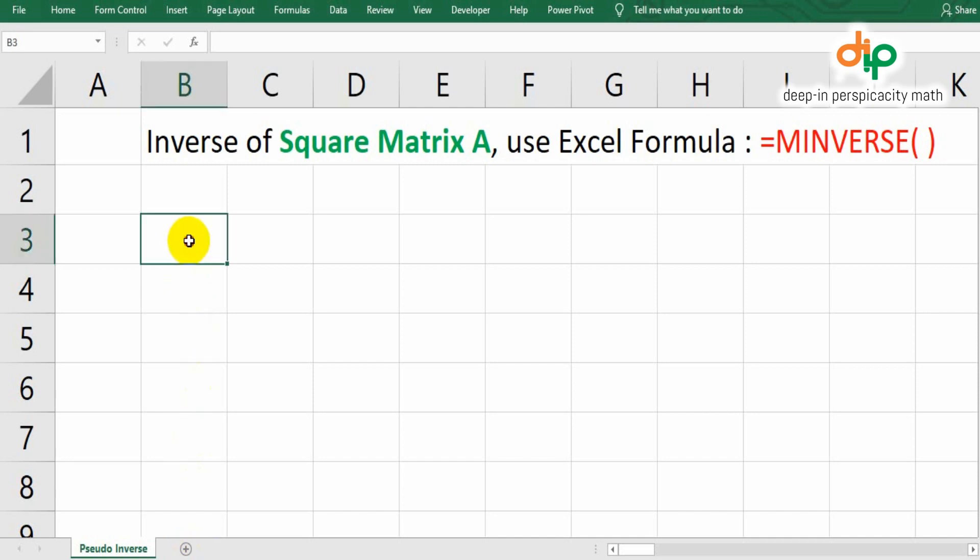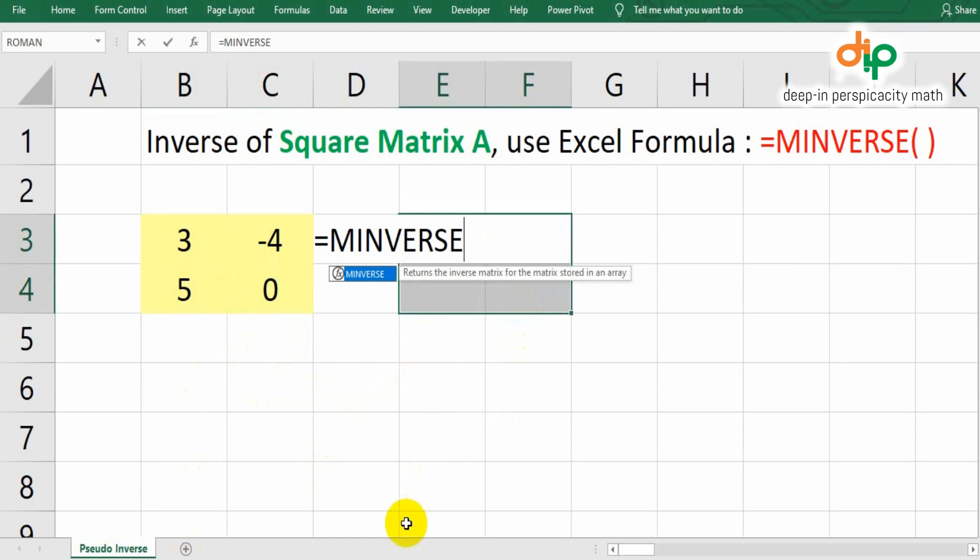First example, we are going to find the inverse of square matrices, matrix A 2 by 2 and matrix A 3 by 3. Microsoft Excel has a developed formula to find the inverse of square matrix, it is MINVERSE. Do not forget to put the equal sign prior to typing the formula.